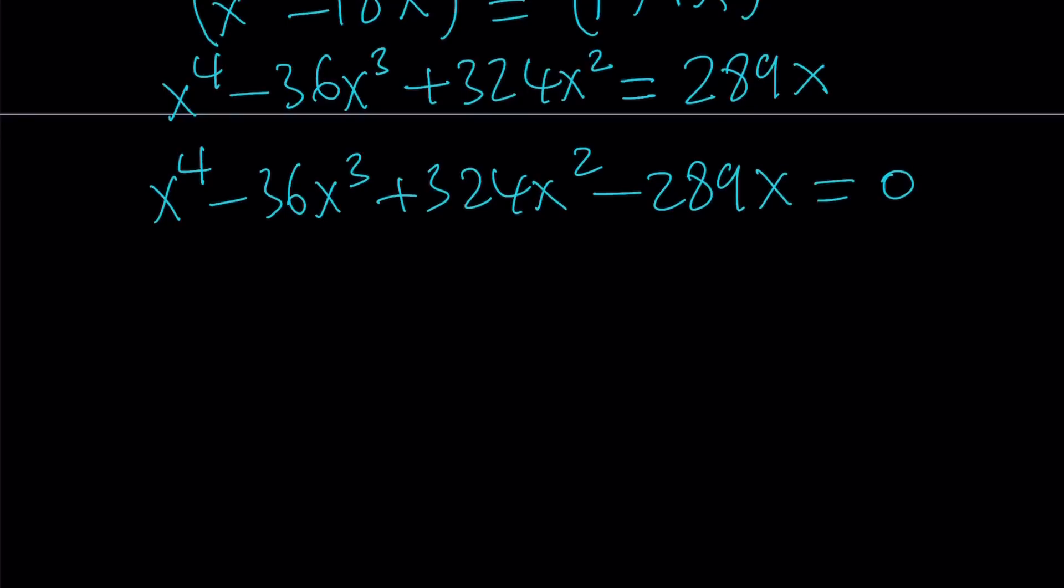Now notice that in this equation, x can be factored out. And also, another thing that I want you to notice, and I keep saying this in different videos, always check the sum of the coefficients and the sum of the odds coefficients and the sum of the even coefficients because x equals 1 and x equals negative 1 could be potential solutions.